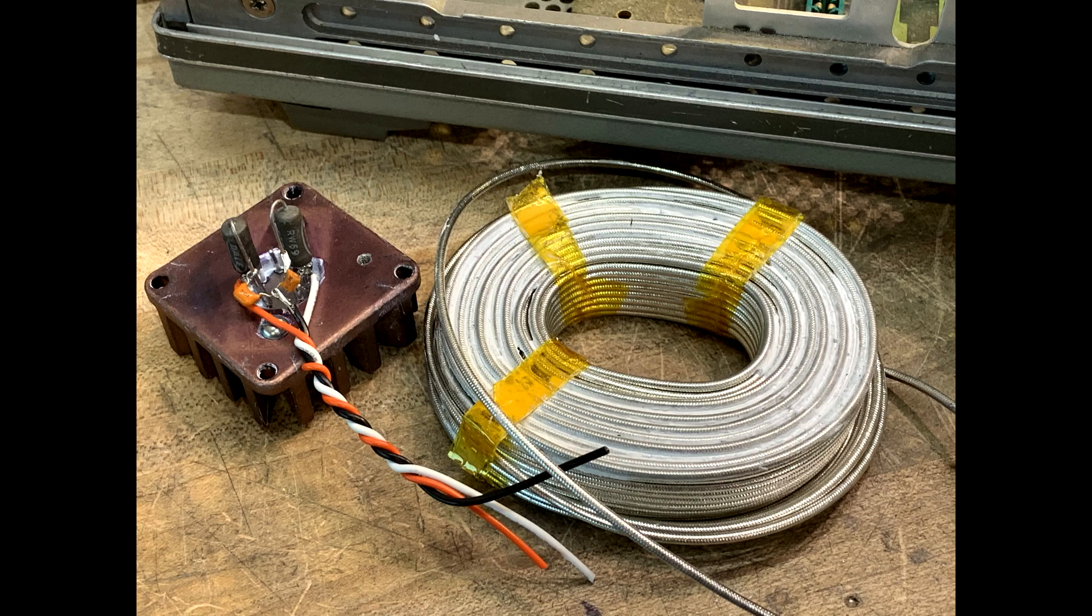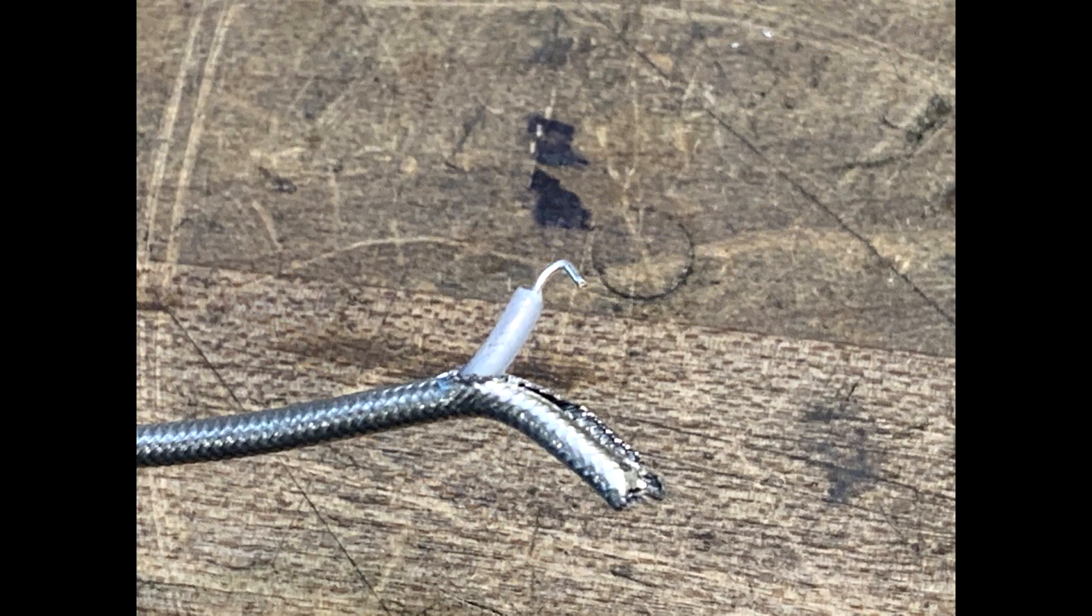So you can see the assembly over there on the left. I'm going to add the coax. The coax is a little weird to strip - you have to use an exacto knife and kind of split it open and pull it apart.